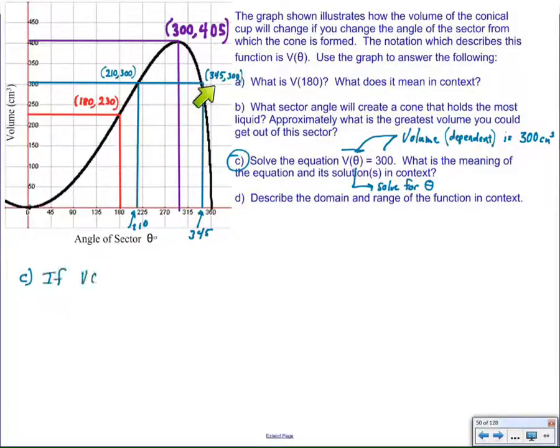So, I label the points on the graph. Then I make a statement in math language that says, if V of theta is 300, then I use this arrow to say that means the solutions are theta is 210 or theta is about 345. Notice the way V equals means approximately. That's my saying that I'm just reading off the graph. I don't know the precise value, but it's near here, near enough for my intents and purposes.